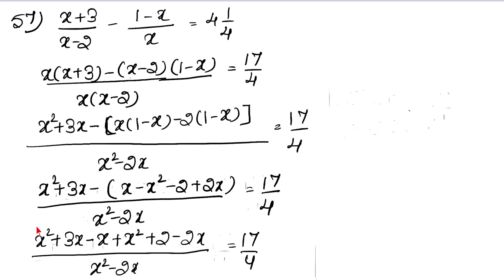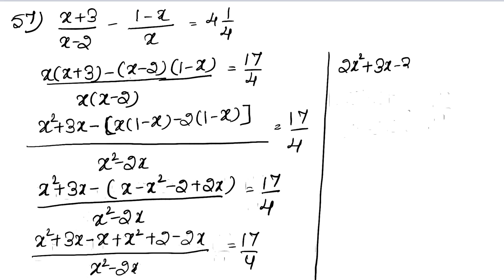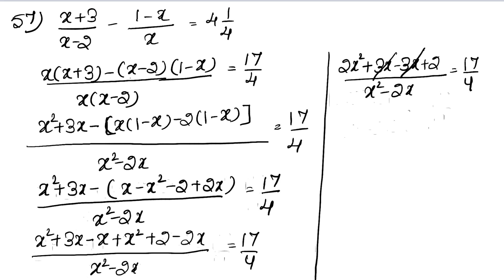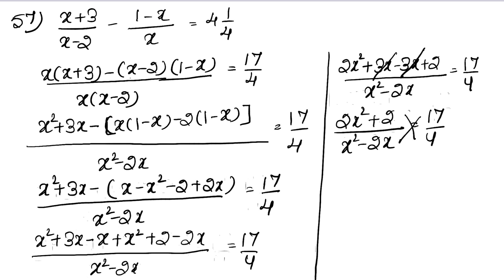Now notice that x² terms are both positive, the 2x terms: one is plus and others are minus, so they cancel each other. We have 2x² plus 3x minus 3x — and these cancel — leaving 2x² plus 2 upon x² minus 2x equals to 17/4.